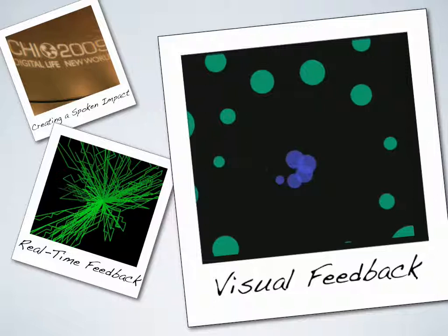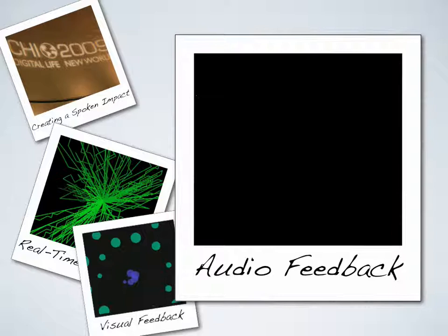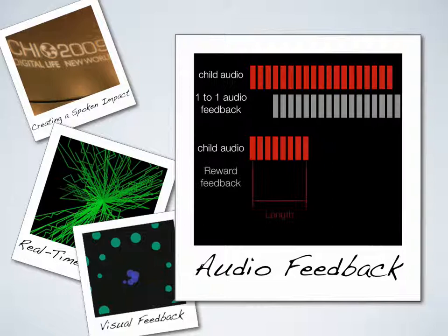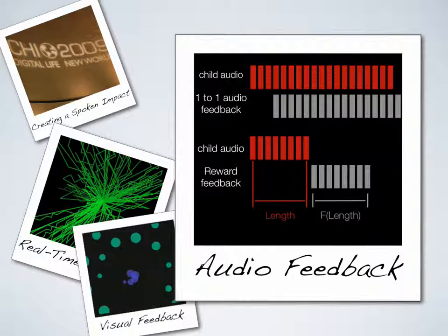The other modality was audio, and there are two different ways to present audio feedback. The first is one-to-one audio, where the child makes a sound and almost immediately the computer makes a sound back — like hearing an echo in a large stairwell. We also used reward-style feedback, where after the child stops vocalizing, that pause allows the computer to play back audio from a TV show the child likes or pre-recorded xylophone music. Importantly, the duration of the vocalization was directly correlated with the duration of the reward sound, so a longer vocalization produced a longer reward.